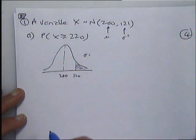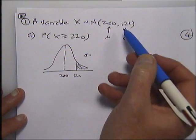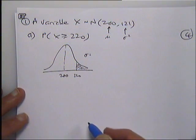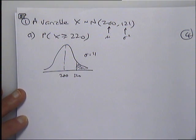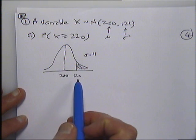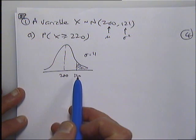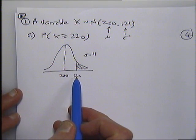If you do drawings like this, it's common to write down what sigma equals just at the side. So sigma squared is 121, sigma will be 11.